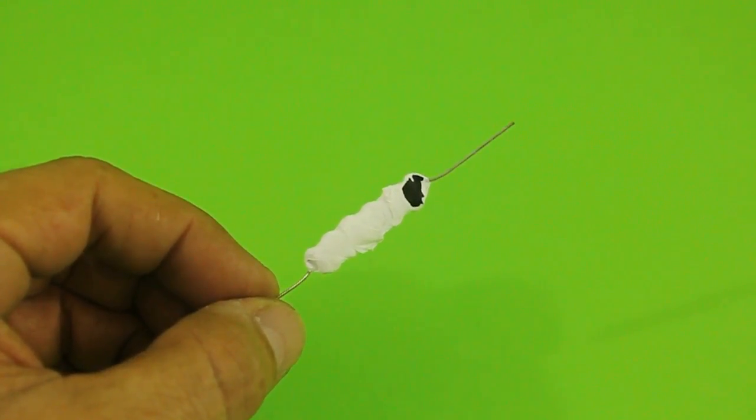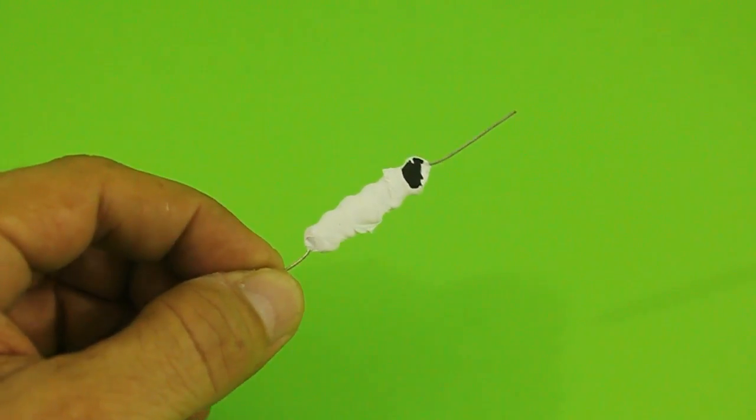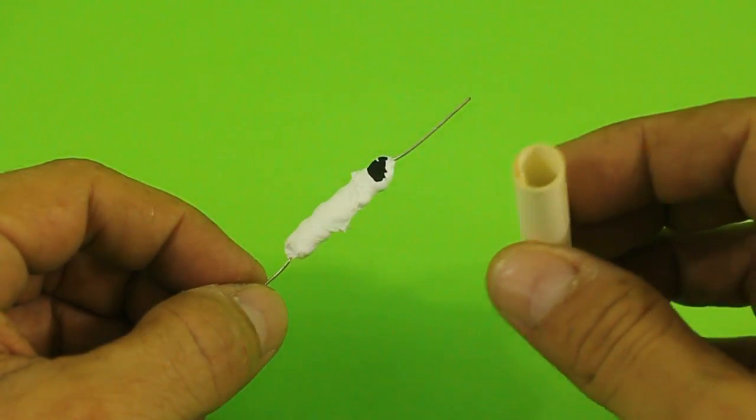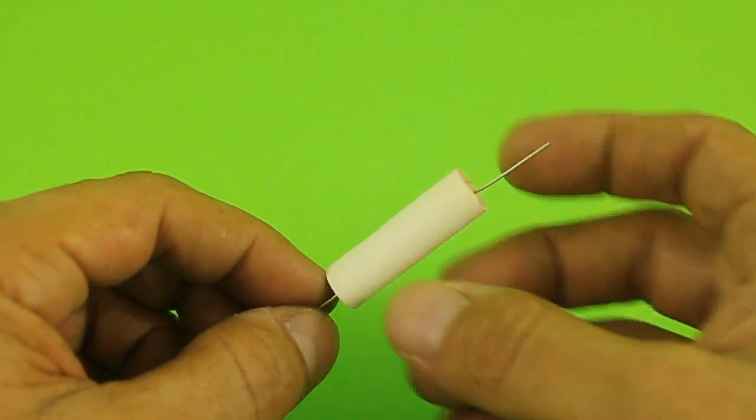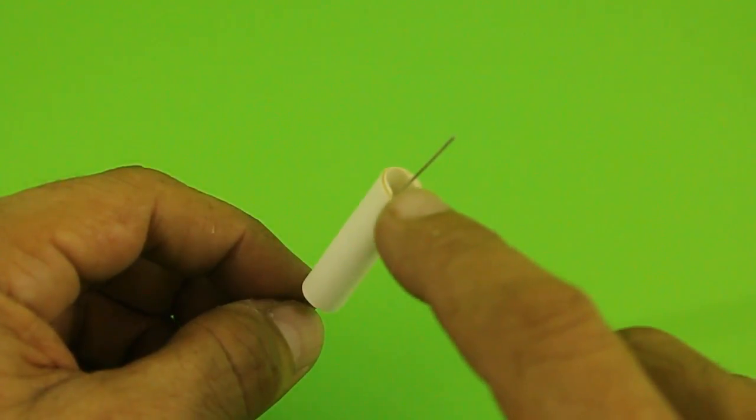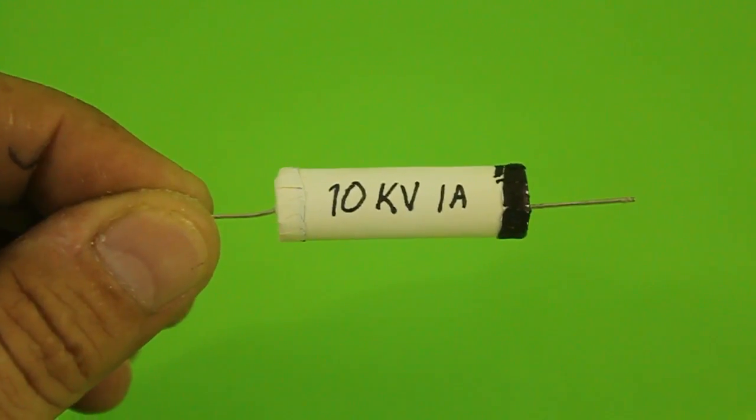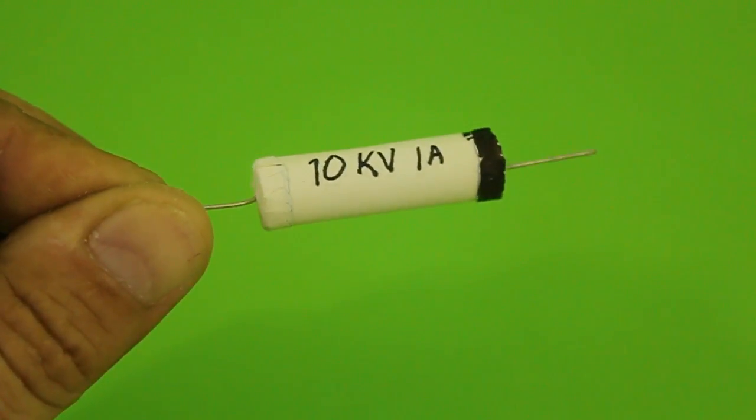Here is the finished diode. Don't forget to mark the negative side. If you want to give it a better look you can make a tube out of paper and put the diode inside, and put also some paper caps. And here is our diode 10 kilovolts at 1 amp.